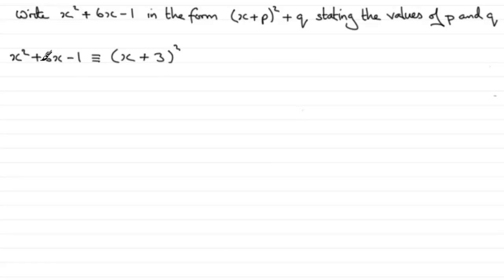If this said minus 8x I would have written half that number in here, minus 4. So you always write down here half the coefficient of x. Now what would we get if we squared this out? Let's just do it over here. See what we have.